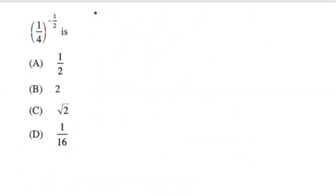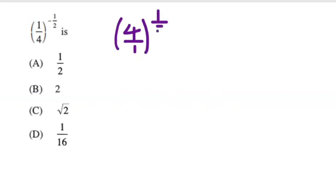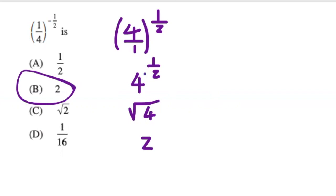The next example is an indices question where we evaluate a quarter to the power of negative one half. When you have a negative power, flip the fraction so it becomes four over one and change the sign to positive. Four over one is just four, and raising to the half is the same as square root, so the square root of four is two. The answer is B.